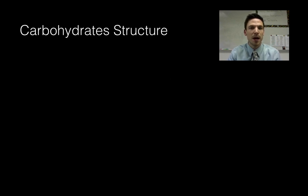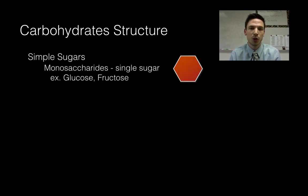So getting down to the structure of those monomers, those smaller units, if we take a look at the smallest unit of a carbohydrate, we're going to get something that's called a simple sugar or a single sugar. We call these things monosaccharides. Mono meaning one and saccharide meaning sugar. So monosaccharide means single sugar.